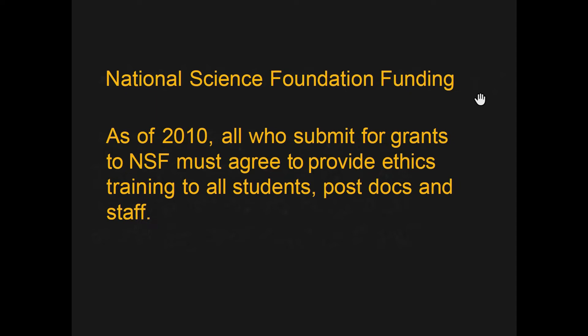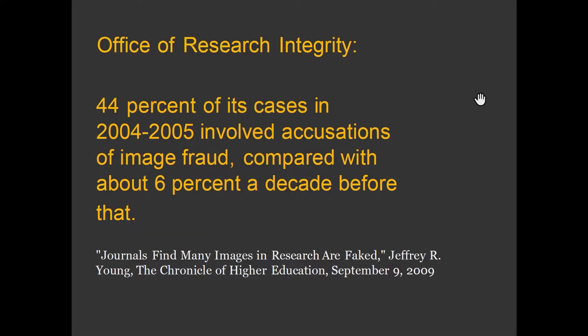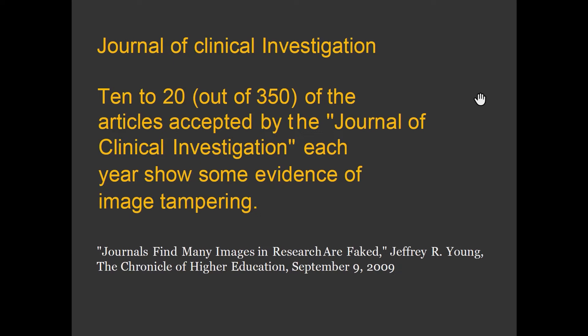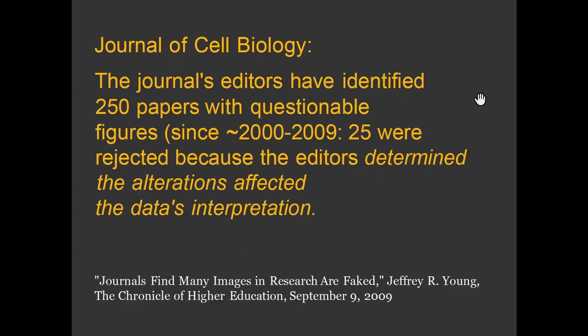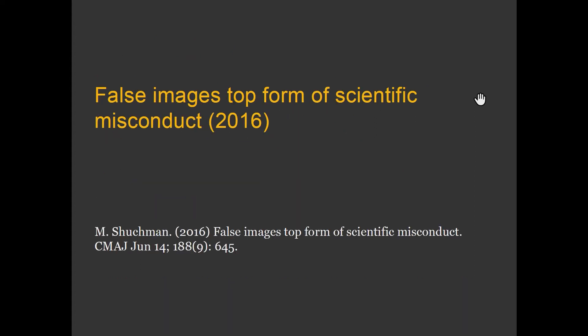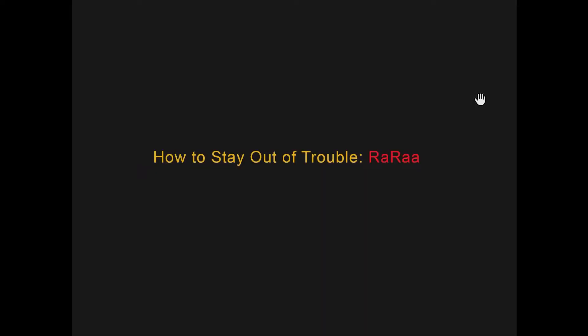As of 2010, all who submit grants to NSF must agree to provide ethics training to all students, postdocs, and staff. The Office of Research Integrity found that 44% of cases involved accusations of image fraud, compared with 6% a decade before — that's the early 2000s. In the Journal of Clinical Investigation, 10 to 20 out of 350 papers showed some evidence of image tampering. The Journal of Cell Biology identified 250 papers with questionable figures that were rejected because the alterations affected the data's interpretation. As of 2016, false images form the top scientific misconduct cases.